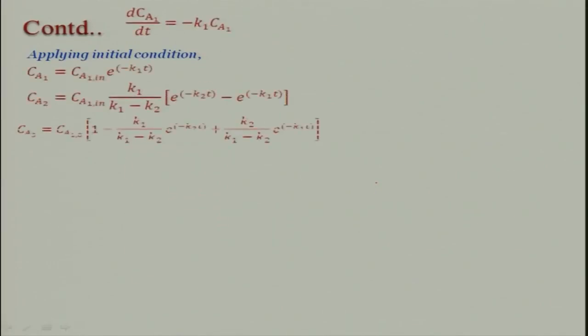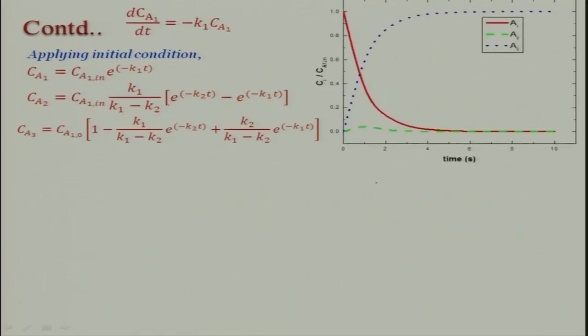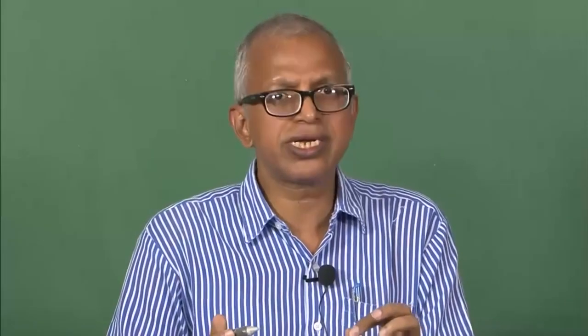Taking the analytical expressions and plotting them with respect to time, you will get: A1 is decreasing, A3 is increasing — which is obvious — and A2 has a little peak and then decreases afterward. These are the analytical results. This is a very simple case where we can solve analytically, but in complex cases we will need to apply the quasi-steady-state approximation.